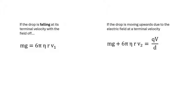When the drop is falling at its terminal velocity with the field off, mg equals 6πηrv1. If the drop is moving upwards with the field turned on, then mg plus 6πηrv2 equals the electric force qV over d.